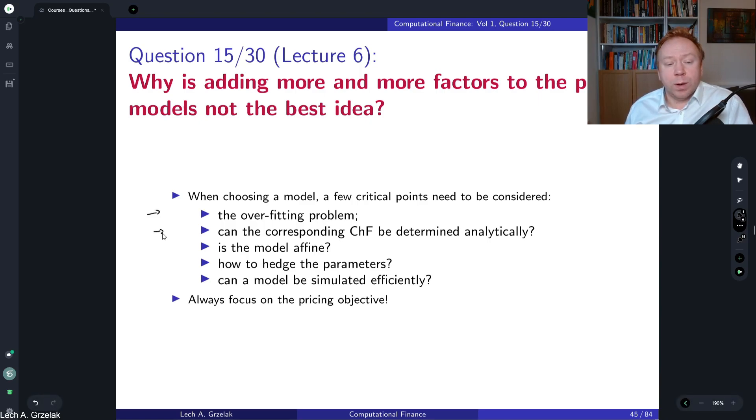Then another question is whether we are able to find the corresponding characteristic function. This is also related to the next point: is the model affine? If you make parameters stochastic, you allow the model to be of a higher dimension. We consider cases where we want to price and calibrate our model, and typically we calibrate models by evaluating multiple times all models for options and then comparing those options to the market quotes. We calibrate our model parameters. It is very important that we can do it very fast.